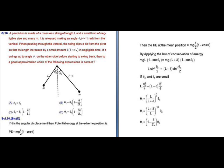IIT JAM Physics JTP 2017, question number 20. A pendulum is made of a massless string of length l and a small bob of mass m. It is released from an angle θ₀ (less than 1 radian) from the vertical. When passing through the vertical, the string slips so that its length increases by a small amount δ in negligible time. It swings up to angle θ₁ on the other side. We are asked which expression is correct.